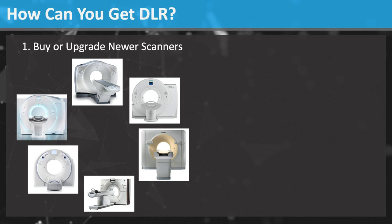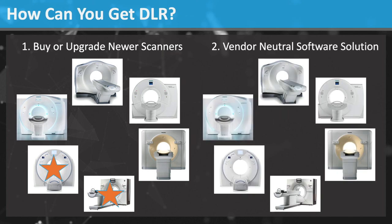To my knowledge, this technology is not available by Siemens or Philips. Further, this would only get you DLR on one or some of your scanners. The other approach is to choose a vendor-neutral solution, which would allow you to have DLR on any or all of the scanners that you choose to activate the service on. This is also a cost-effective approach.